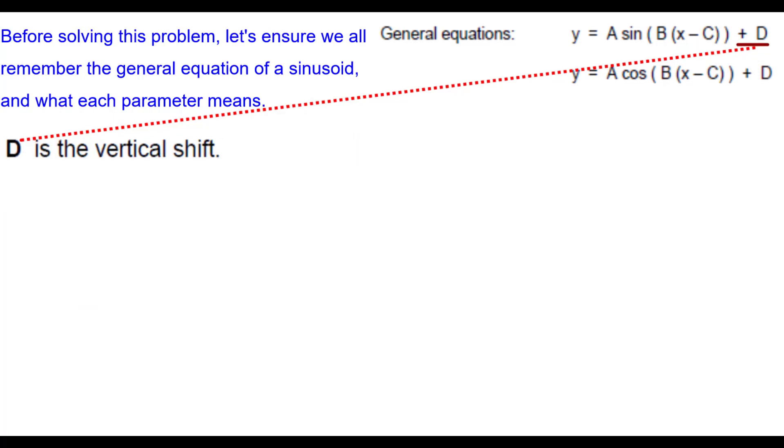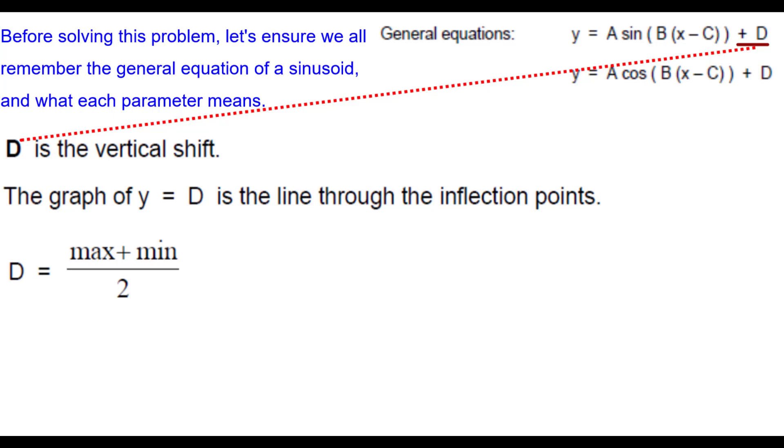D is the vertical shift. The graph of the line Y equals D is the line through the inflection points. And D is found by taking the average of the max and min.